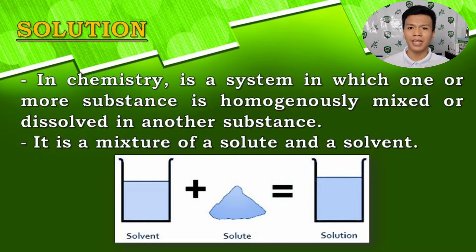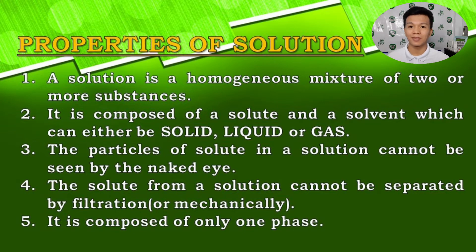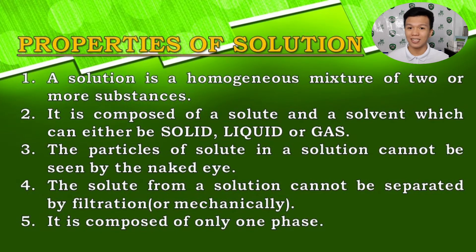Solutions are a homogeneous mixture because whenever we say solution, there is only one phase we can see in it. We cannot see its composition or its parts — only one phase. Simply put, it is a mixture of a solute and a solvent. In the picture on this slide, you can see: solvent plus solute equals solution. What a solute and solvent are, we will see further in our discussion.